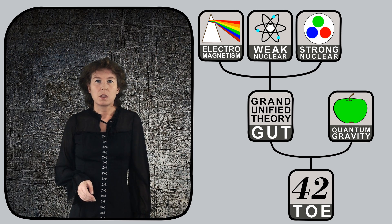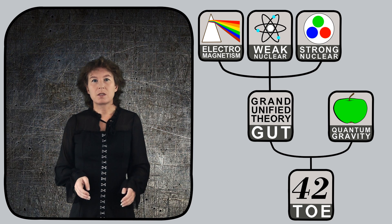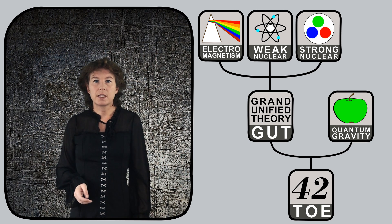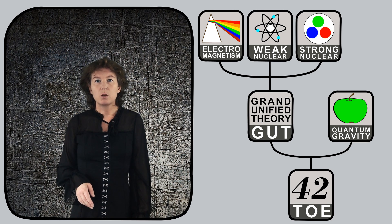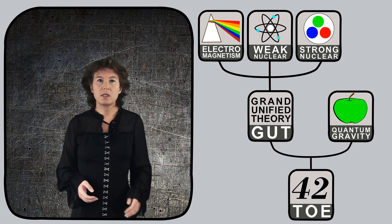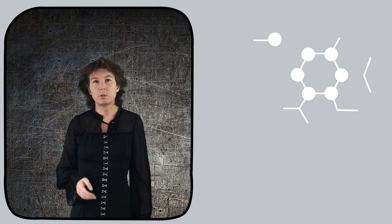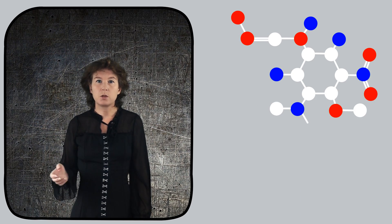The name is somewhat misleading. Such a theory of everything would of course not explain everything, because for most purposes it would be entirely impractical to use it — for the same reason it's impractical to use the standard model to explain chemical reactions, not to mention human behavior. The description of large objects in terms of their fundamental constituents does not actually give us much insight into what the large objects do. A theory of everything may explain everything in principle, but still not do so in practice.